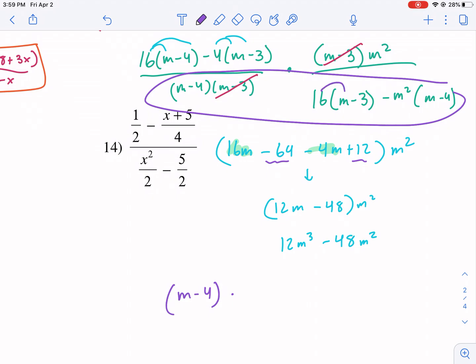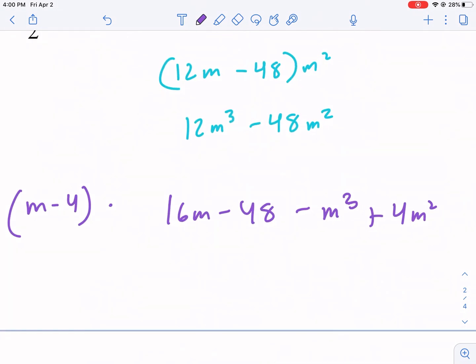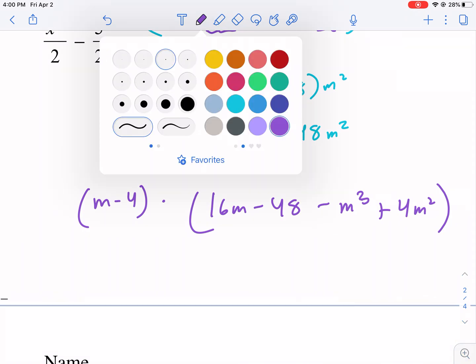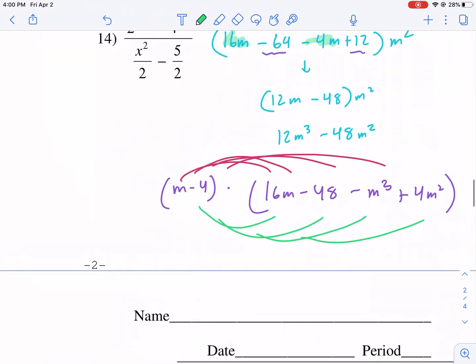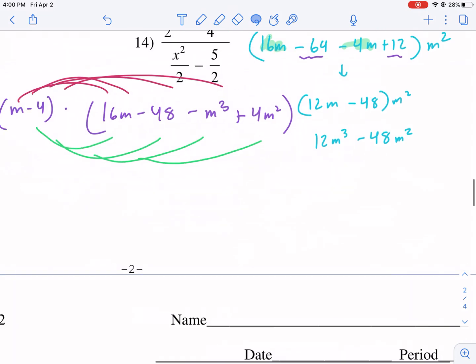and this is going to multiply last. I'm going to multiply these out here together first. So I'm going to have 16m minus, that's 48, minus m cubed plus 4m squared. What can I combine here? It looks like nothing, actually. So now what I'm going to do is I have to multiply all of this. I have to multiply all this by these two things.